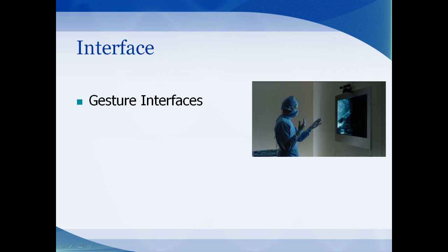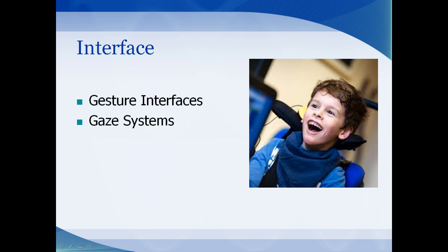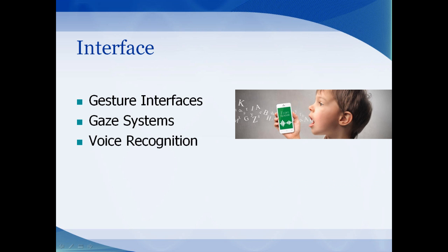You can use gesture interfaces, where you move and the computer detects and interprets your movements. Gaze systems are great for people who are quadriplegic — the user can just move their eyes and the computer responds appropriately. Voice recognition, or natural language processing, is becoming more and more common with things like Google Assistant or Siri, and it also helps people with speech disorders to be understood.